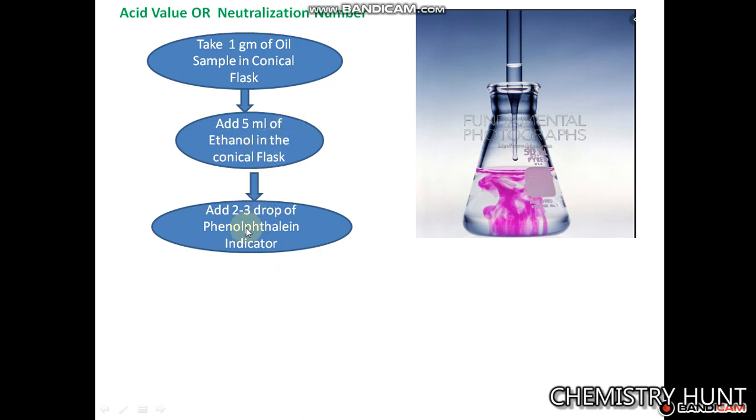In this conical flask, we take oil, then ethanol, and then add two to three drops of phenophthalein indicator. After that, titrate with 0.1 normal KOH solution.